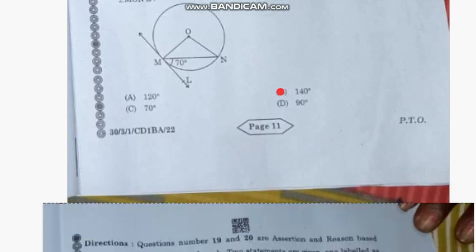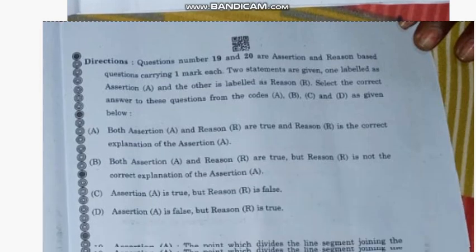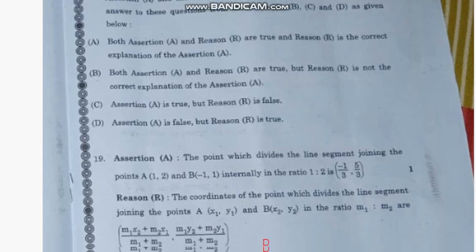Question number 19: Assertion A: The point that divides the line segment joining points A(1, 2) and B(-1, -1) internally in the ratio 1:2 is (-1/3, 5/3). Reason R: The coordinates of the point which divides the line segment joining points A(x₁, y₁) and B(x₂, y₂) in the ratio m₁:m₂ are [(m₁x₂ + m₂x₁)/(m₁ + m₂), (m₁y₂ + m₂y₁)/(m₁ + m₂)]. The correct answer is option D: A is false but R is true.